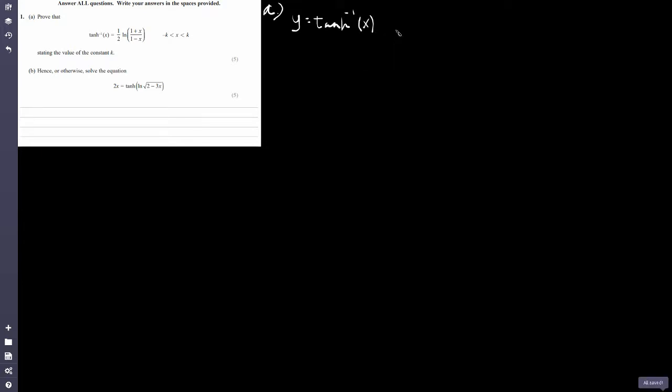So we've got to prove that the inverse hyperbolic tan is equal to this. So what I'm going to do first is I'm going to let y equal this expression here, this hyperbolic tan inverse of x. So if I times both sides now by hyperbolic tan, what I'm going to get is hyperbolic tan of y, and that will just be equal to x now. Because if I times this side by hyperbolic tan, it'll just cancel. You just get left with x.